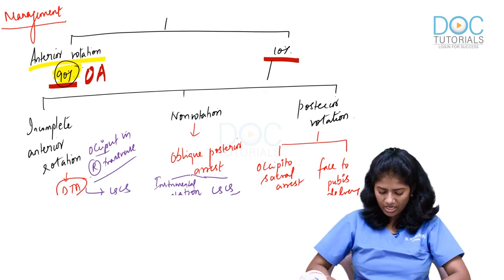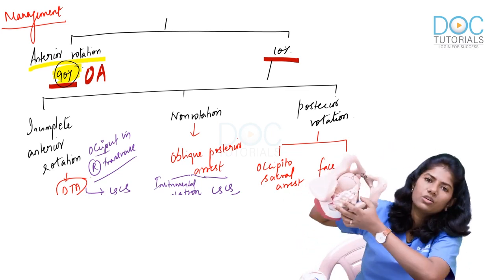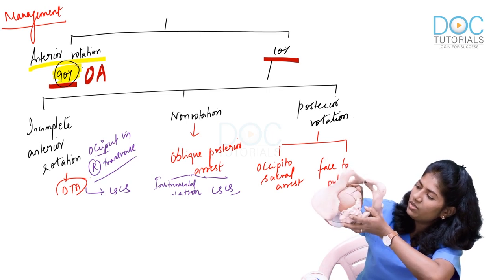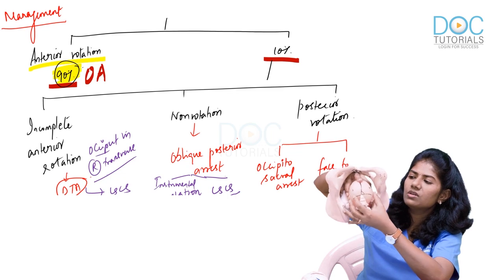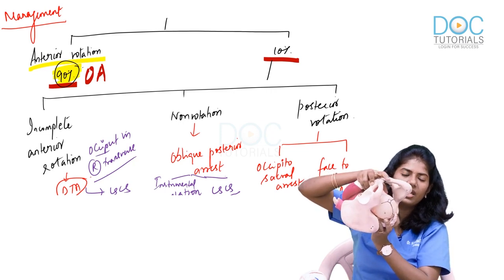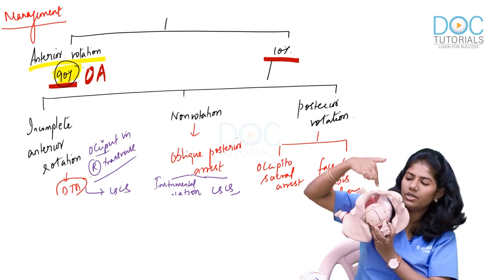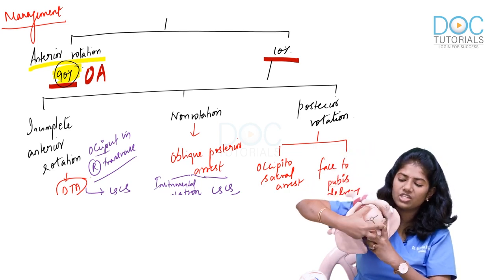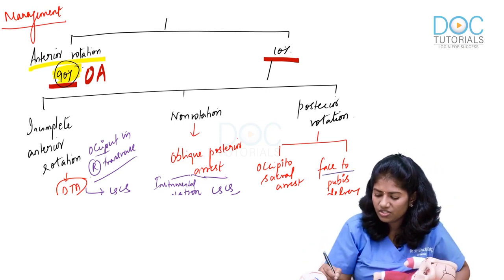The third possibility is posterior rotation — after rotating 1/8th of the circle, the occiput which was on the right sacroiliac joint moves posteriorly and now lies on the sacral promontory. In this position, the face is under the pubis. The occiput is under the sacrum and the face is under the pubis; delivery occurs by extension. This is called face-to-pubis delivery.